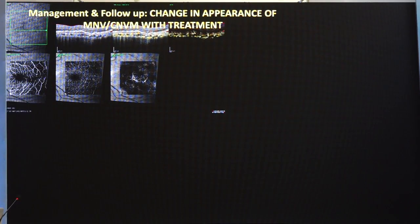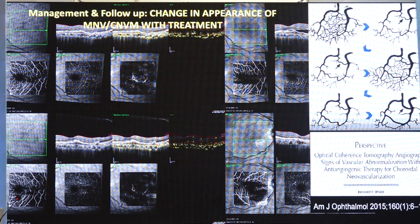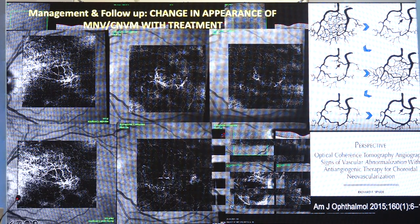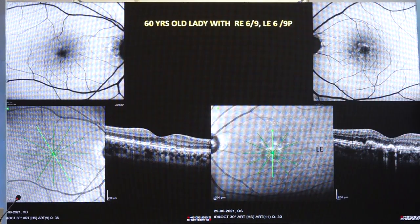Treatment response can be monitored by seeing the appearance of the neovascularization. These are serial pictures of OCT angiography of a patient — you can see the response after giving the injection, with regression in the neovascular network, but it again re-grows. The maximum regression occurs after two weeks of treatment. Re-proliferation with reopening of the previously closed choroidal neovascular membrane was noted after four weeks.